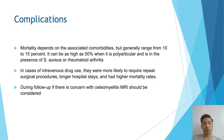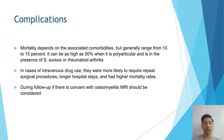Things can go badly with septic arthritis. Mortality depends on associated comorbidities but generally ranges from about 10% to 15%. It can be as high as 50% when it is polyarticular and in the presence of staph aureus or rheumatoid arthritis. In cases of IV drug use, patients are more likely to require repeat surgical procedures, have longer hospital stays, and higher rates of mortality. Follow-up with an MRI should be considered if there is concern about osteomyelitis.